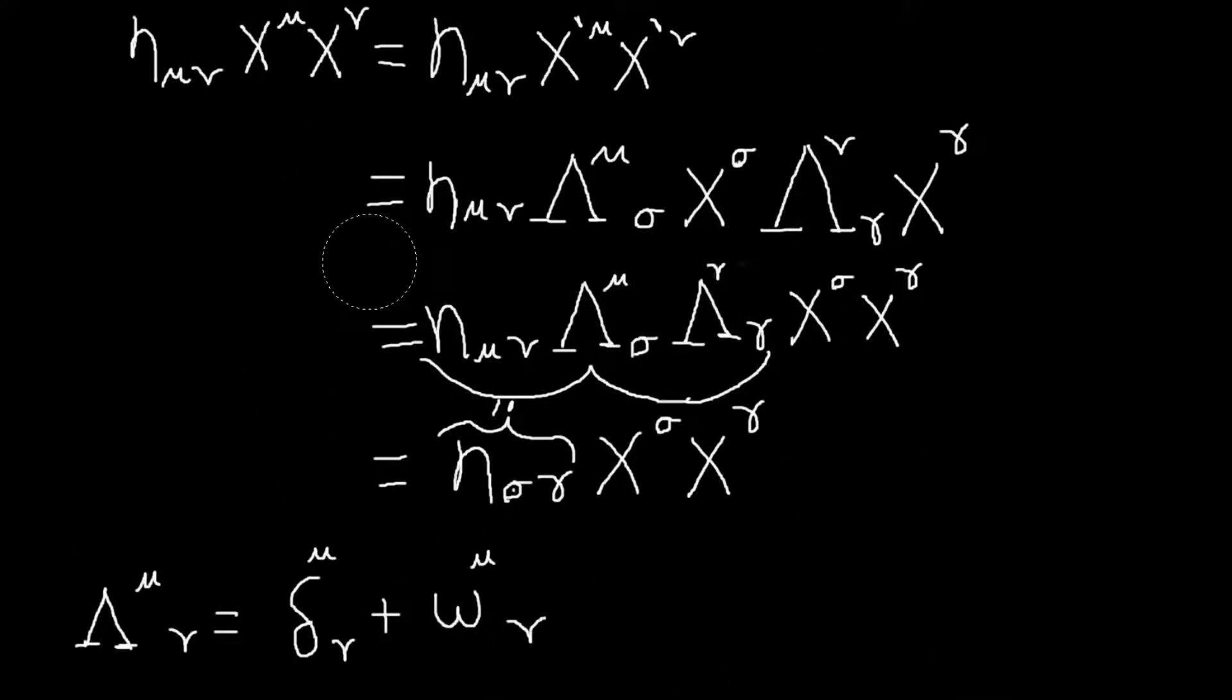And so now what we can do is if we write our Lorentz transformation as an infinitesimal. So basically, it's infinitesimally far away from the identity transformation. So that will be our identity in matrix form is delta. And then we'll have a matrix of infinitesimal parameters. And we're going to call w. And so we can always do this. There's nothing stopping us from writing it like this if we're dealing with infinitesimal parameters.